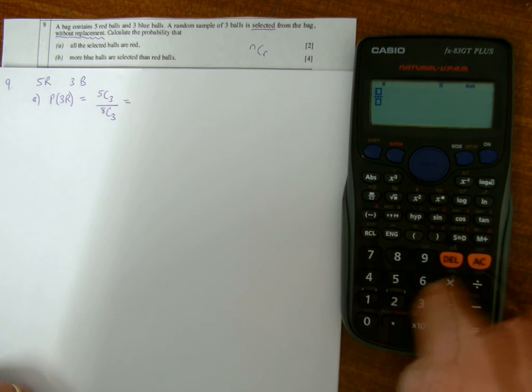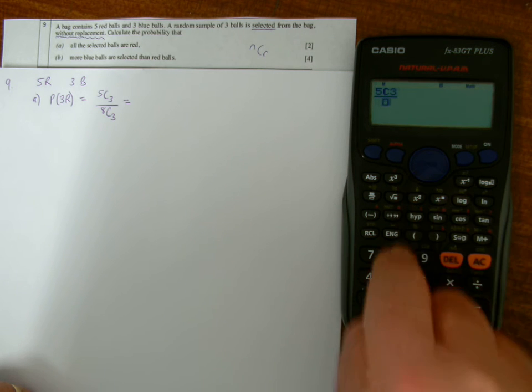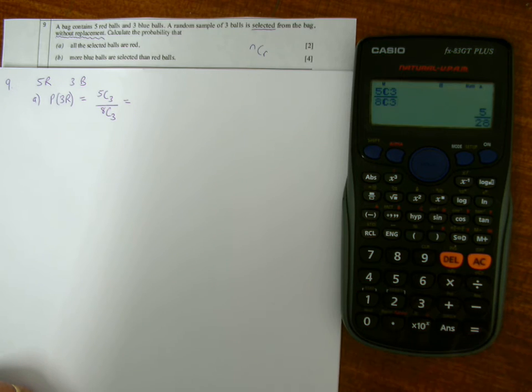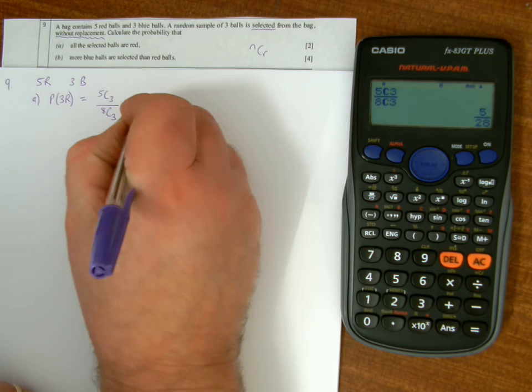Boxing button, five choose three over eight choose three, and that gives me five over 28.